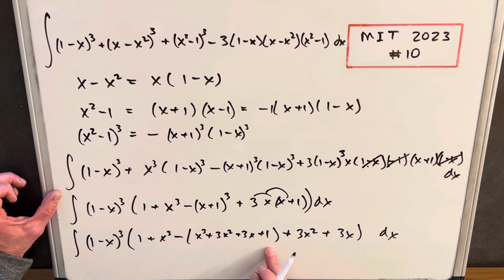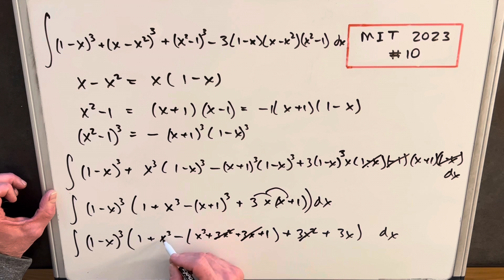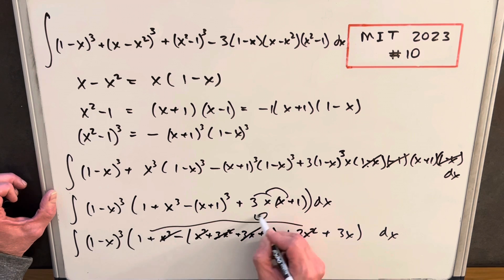Well, then notice we have a minus sign on all this stuff. So we're going to have a bunch of cancellations. 3x squared minus 3x squared. Those are going to cancel. 3x minus 3x, that's going to cancel. We have an x cubed minus an x cubed. That cancels. 1 minus 1. And this whole thing is 0.